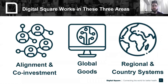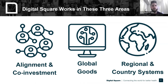What is Digital Square? Digital Square was founded with the idea that the world is still full of digital health investments that are redundant, lack integration between healthcare data sets, and result in wasted dollars and unsustainable projects. So we have set ourselves up with three main work areas: alignment and co-investment, our global goods, and our regional and country systems. We coordinate investments into smart, scalable technology solutions, creating an environment in which these technologies can be sustained.